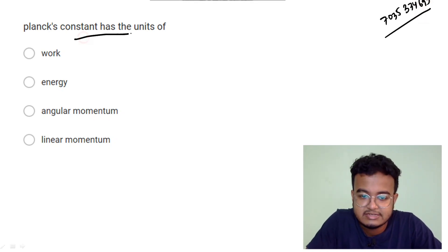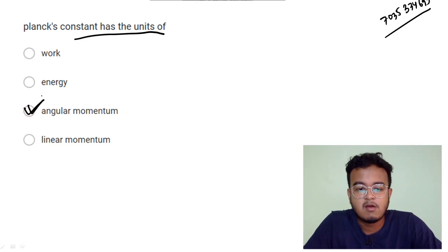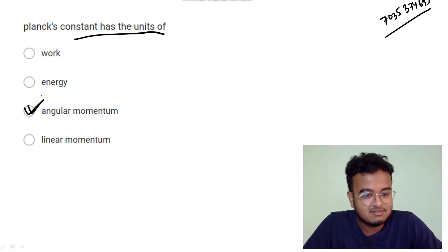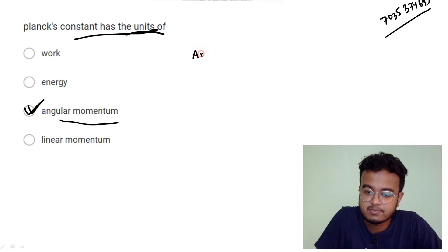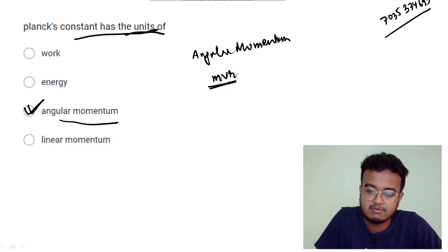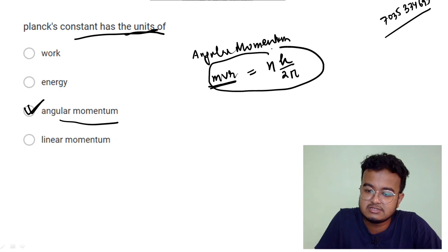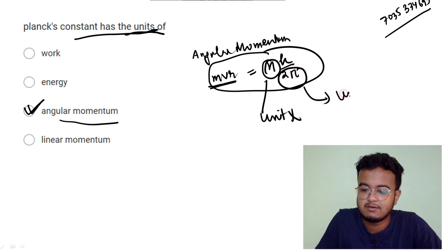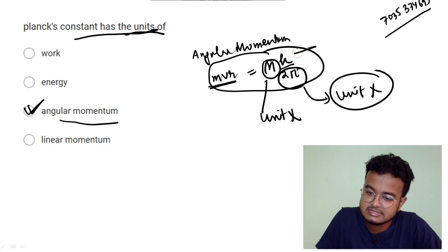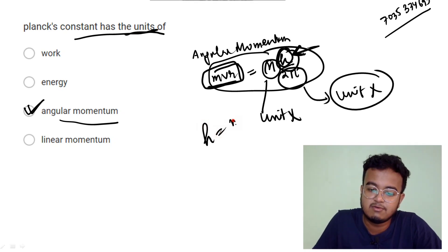Planck's constant has the unit of angular momentum. So it was to do with angular momentum. Planck's constant or unit — what is it? It has the same unit as angular momentum. The formula for angular momentum from Bohr's model: mvr equals n times h divided by 2π.